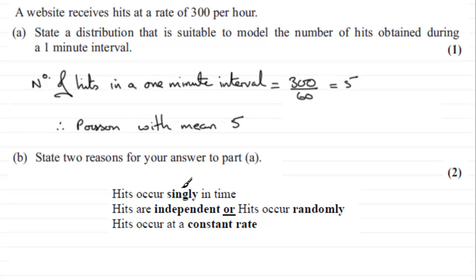So hits occur singly in time, or you could have hits are independent, or you could have hits occur randomly. Or you could have quite separately, hits occur at a constant rate. So any two of these heavily typed black answers are going to be suitable. Okay?